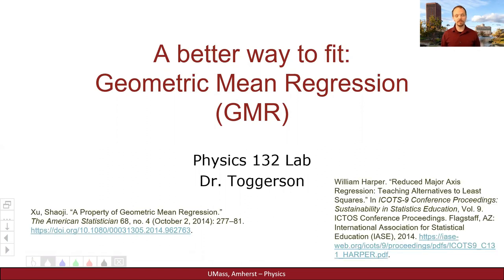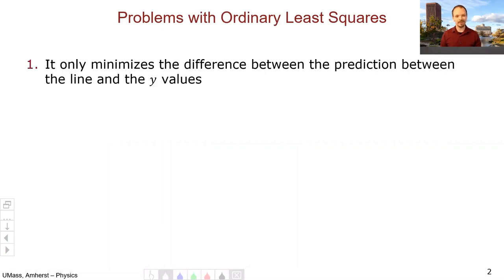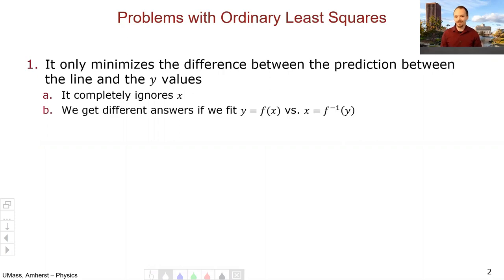The content of this video is based heavily upon the work of Xiaojie Zhe and William Harper. Before we go on, it's worth reviewing the problems with the ordinary least squares regression method. First, ordinary least squares only minimizes the difference between the prediction line and the y values, so it only looks at the distance between the data and the line in the y direction. It completely ignores the distance in x, which means we get different answers if we fit y as a function of x or x as a function of y, and this is generally considered to be undesirable.